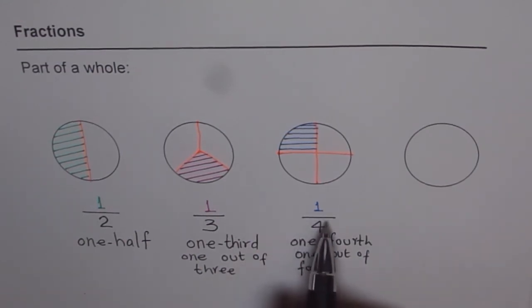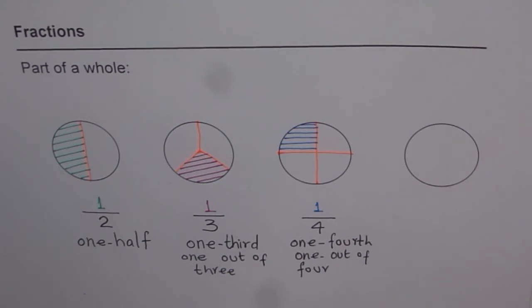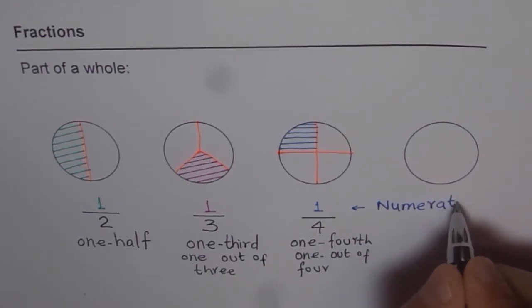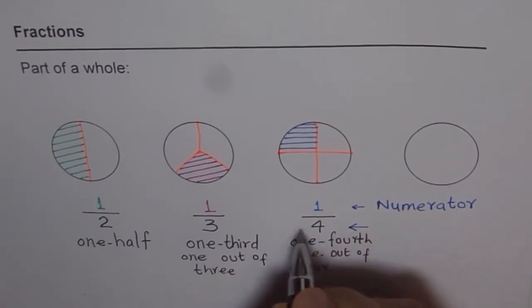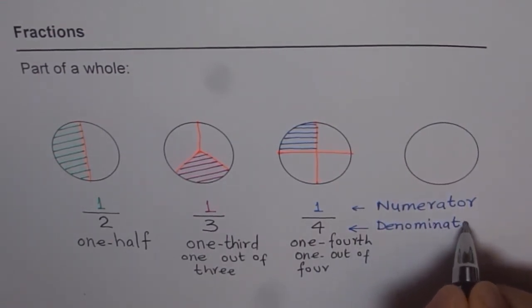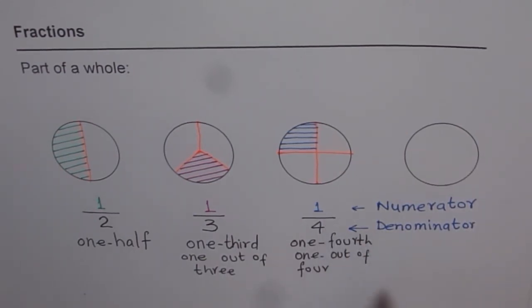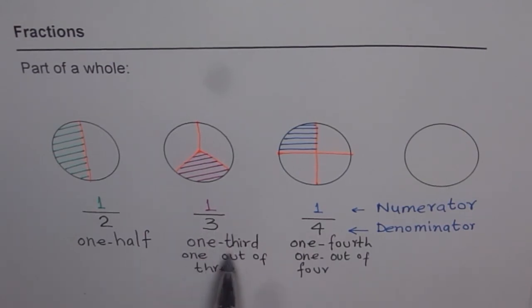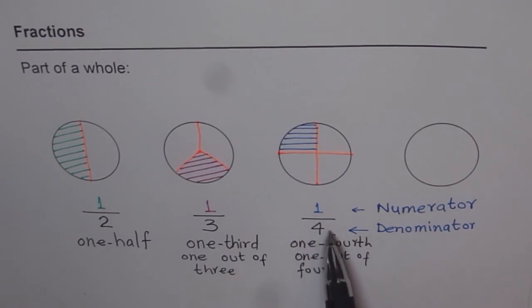Unit fractions are fractions which have one on the top. Let me also give a name to this top and bottom. The names which are universally followed: for the top portion, we say numerator — N-U-M-E-R-A-T-O-R. And the number written below this line is called denominator — D-E-N-O-M-I-N-A-T-O-R. You need to learn these spellings. So here we have numerator as one, denominator is two; numerator one, denominator three, and this fraction is called one-third or one out of three; this is one-fourth, one out of four — numerator is one, denominator is four. That is how we can write many fractions.